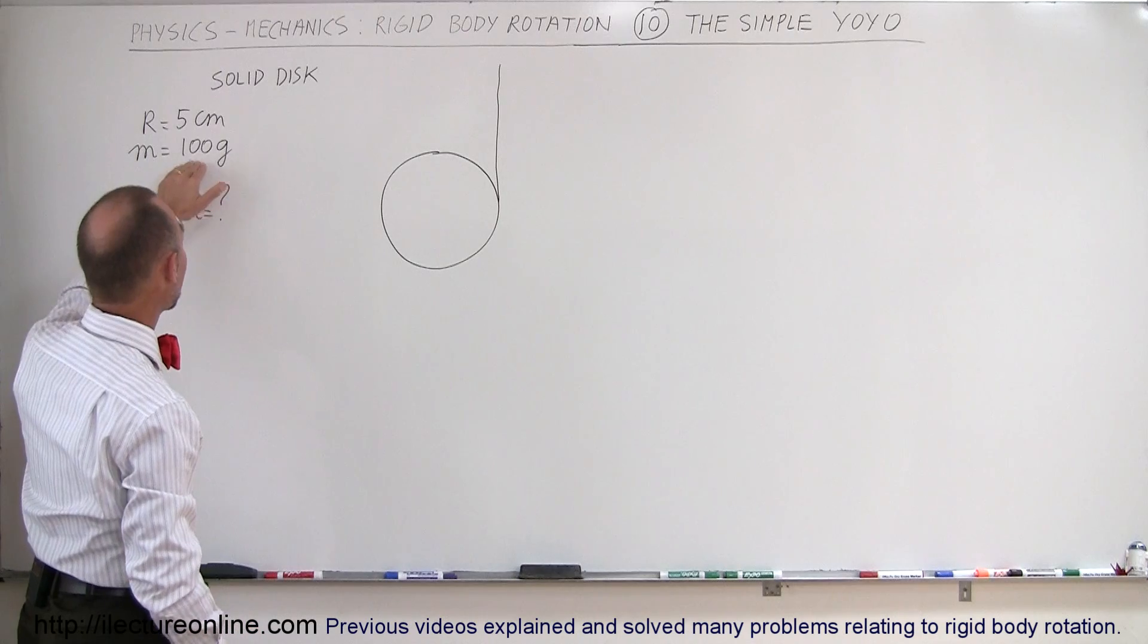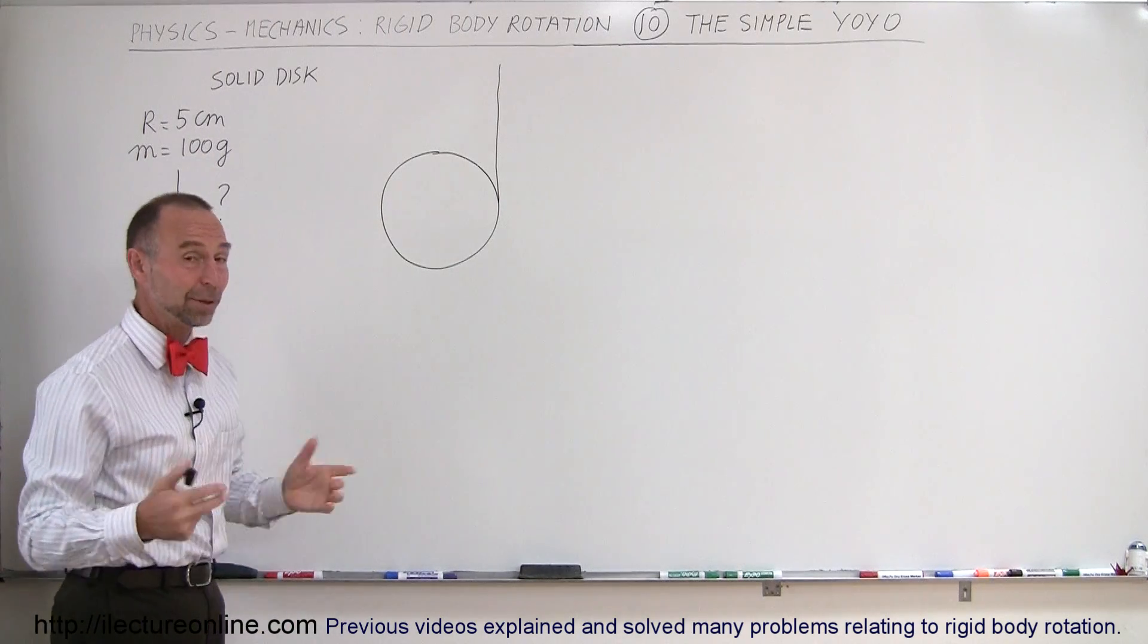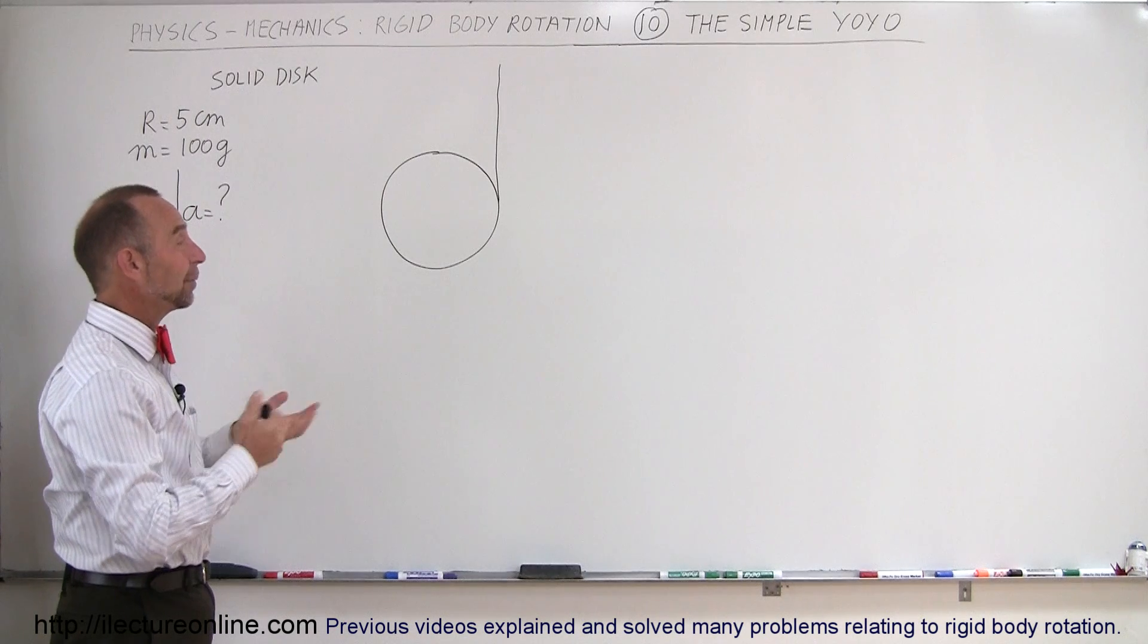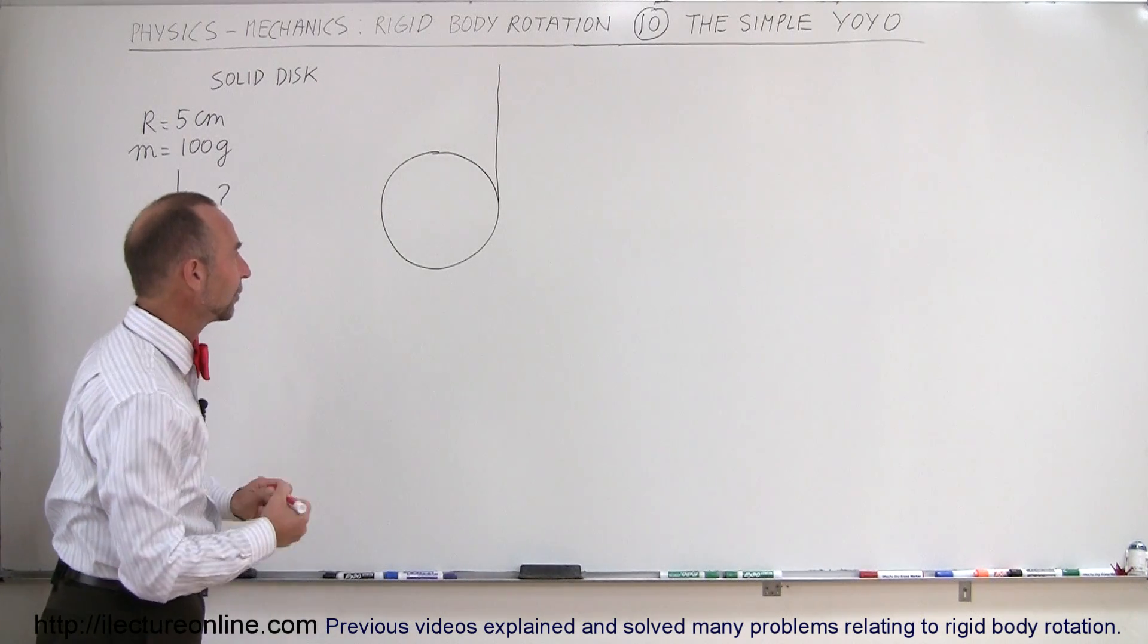Let's assume that the mass is 100 grams and the radius of the yoyo is 5 centimeters. It's a big yoyo but it'll work. So how do we go about doing that? Well, the first thing you want to do is draw the forces acting on the yoyo.